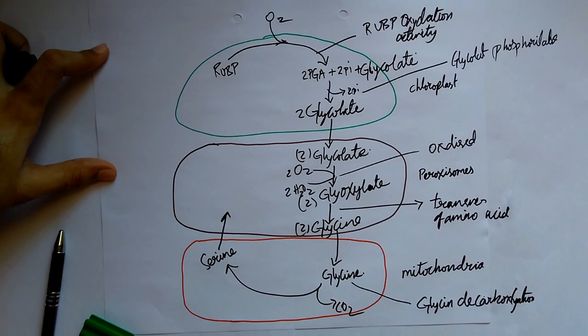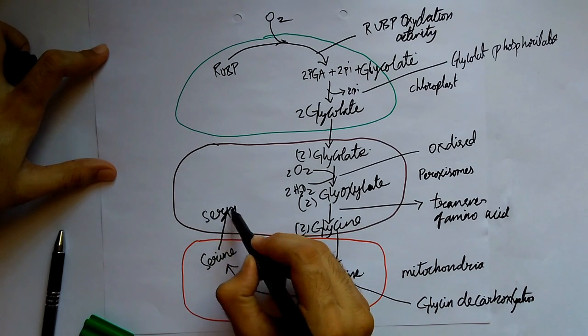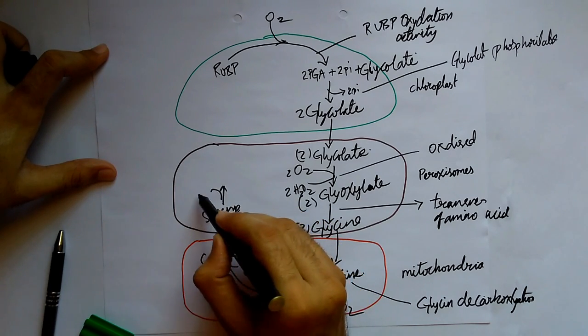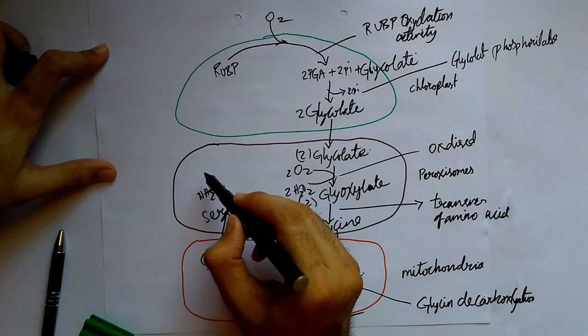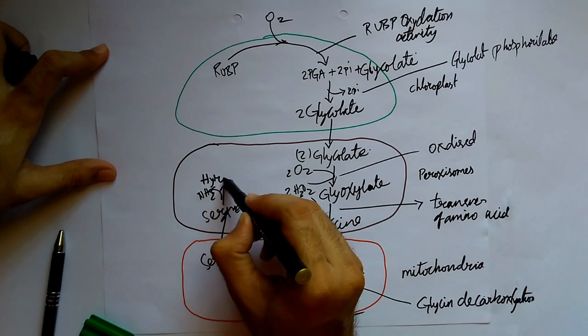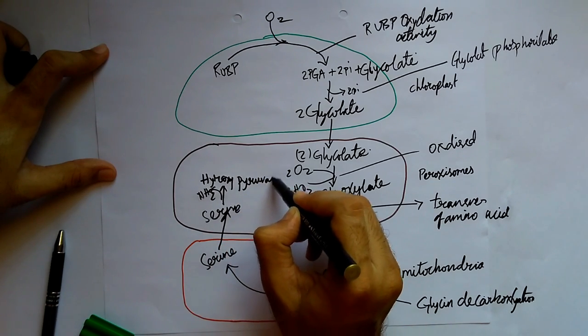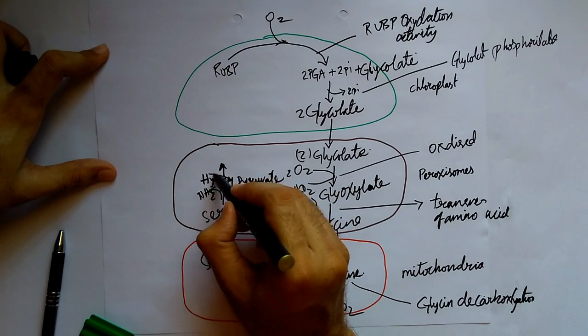This serine is taken like this and gives hydroxypyruvate. This pyruvate is again converted.